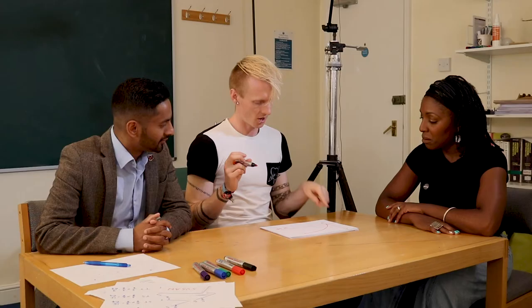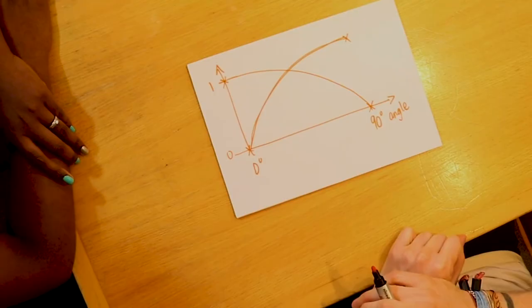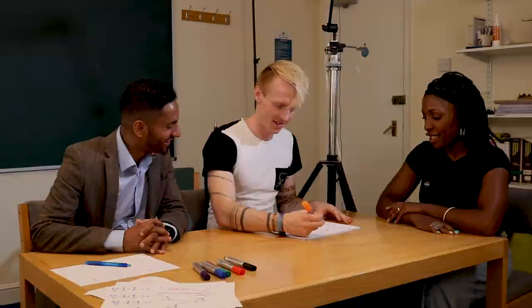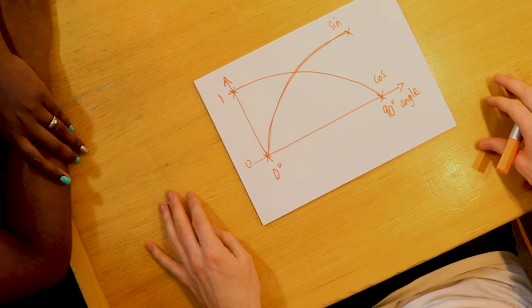Now, if we have cos, cos at 0 is equal to 1. And then at 90, it's 0. So they swap places. It's gone all the way down to 0. And it's got the same shape, but just flipped.